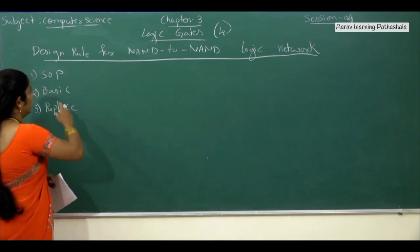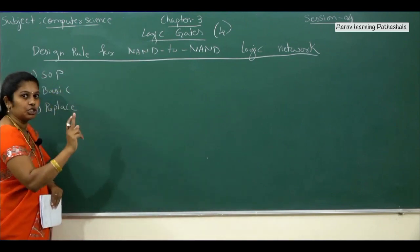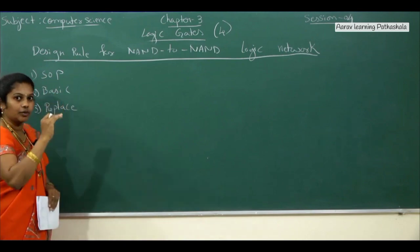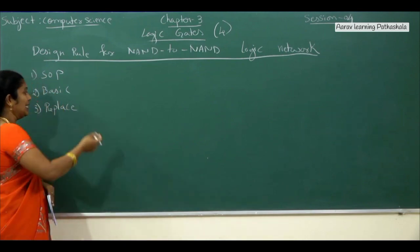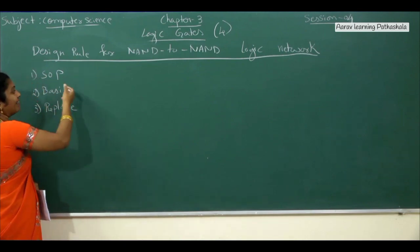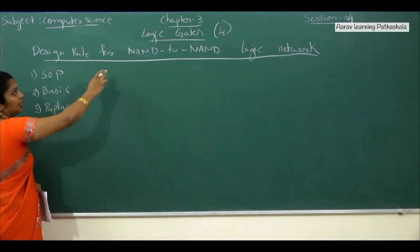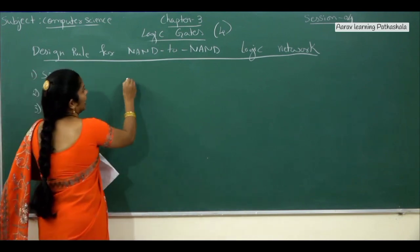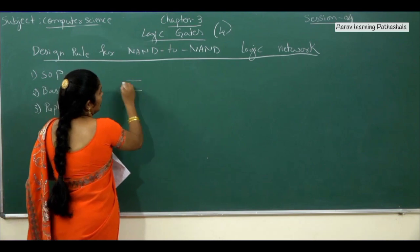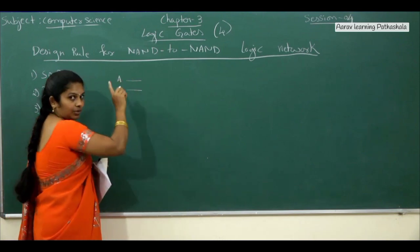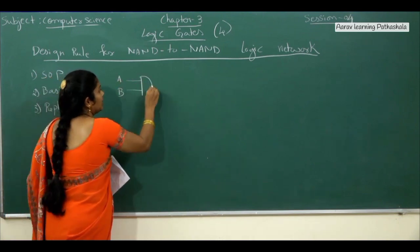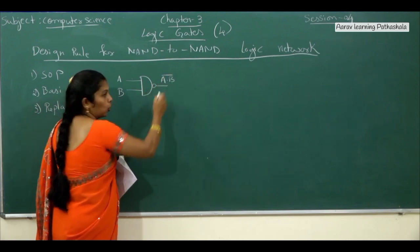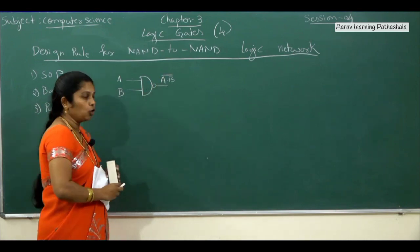To summarize: first check whether the given expression is in sum of product format, then write the circuit diagram using basic gates, and finally replace all basic gates with NAND symbols only. The NAND symbol we use is the D-shape — we write A and B as inputs, then a circle at the end. The output is A dot B whole bar.